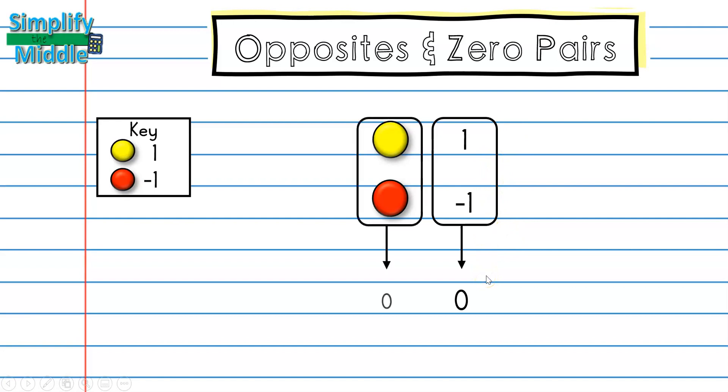The same is true for my counters. Because this yellow one represents positive 1, and this represents negative 1, when I combine them, I also get 0. This is an example of a zero pair. And remember, in a zero pair, we are going to be adding together a number and its opposite.